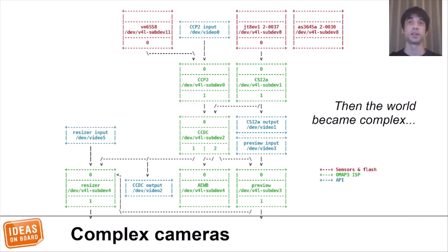But then we got complex cameras. On many embedded devices, all the components of a camera got split. We have at least an image sensor and a receiver, and sometimes even an ISP. The image sensor outputs data on a dedicated hardware interface such as MIPI-CSI2. The receiver is integrated in the SoC, and we can use it to transfer images to memory using DMA. If we also have an ISP, then we need to send images back and forth to get usable quality images, and all of these components must be coordinated in user space.